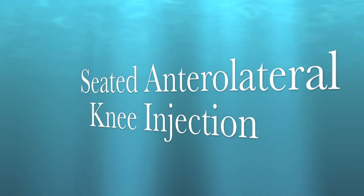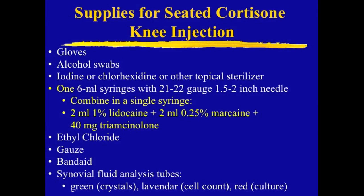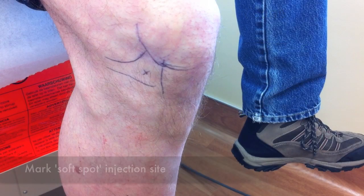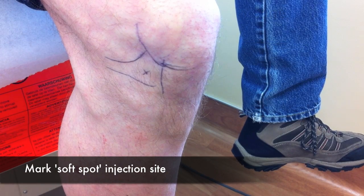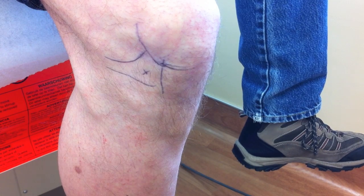For the seated anterolateral knee injection technique, the supply list was reviewed in part one. However, there is one simplification you can make: since you're less likely to get a synovial flashback in this position, you can prepare a single syringe of anesthetic and cortisone and do the procedure in one step. This is another reason the seated injection is faster than a supine approach.